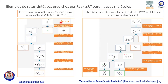Examples of predicted synthetic routes include a Pfizer antiviral compound PF-07321332 currently in clinical trials against SARS-CoV-2, and a GLP-1R receptor agonist developed by Eli Lilly that reduces oral glycemia. In both cases, the reaction scheme is presented with each step clearly identified by reaction type.